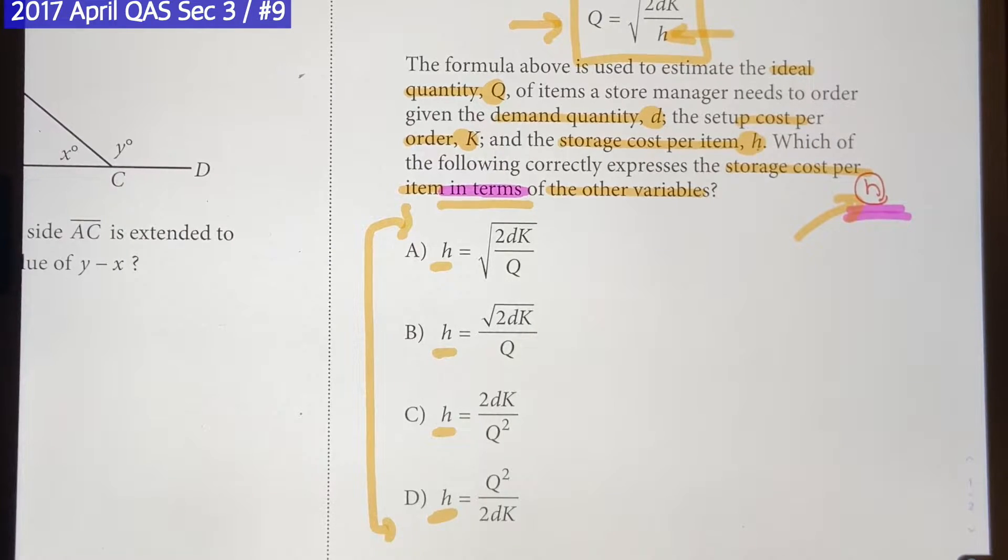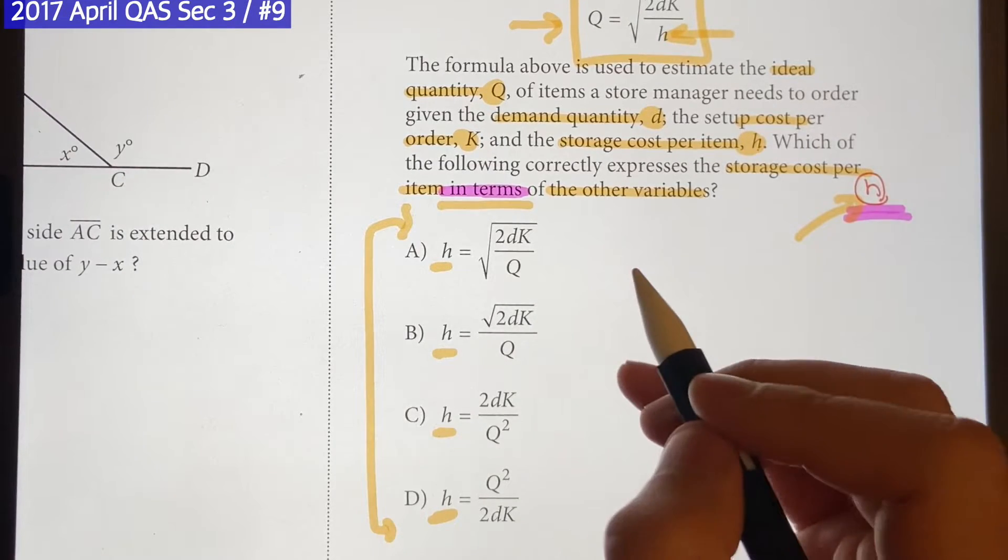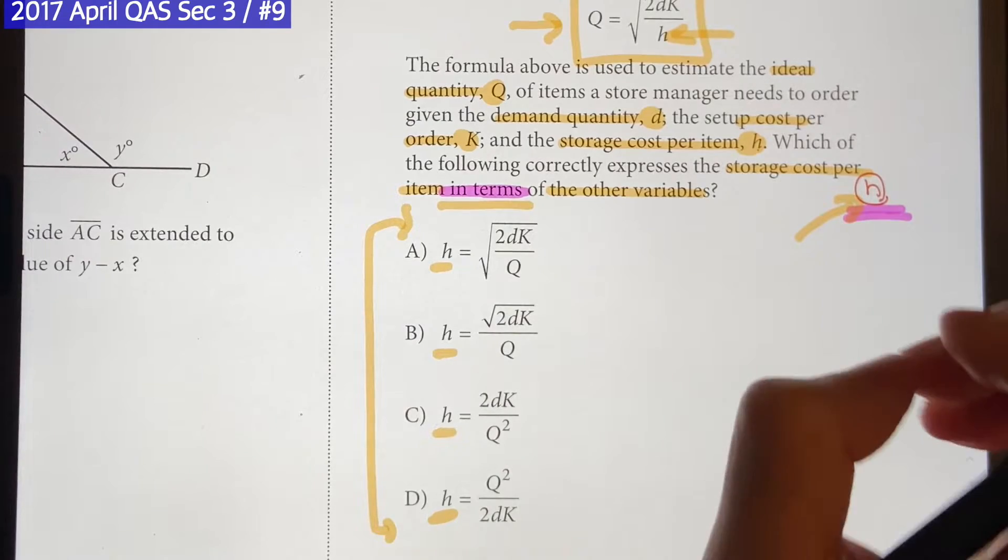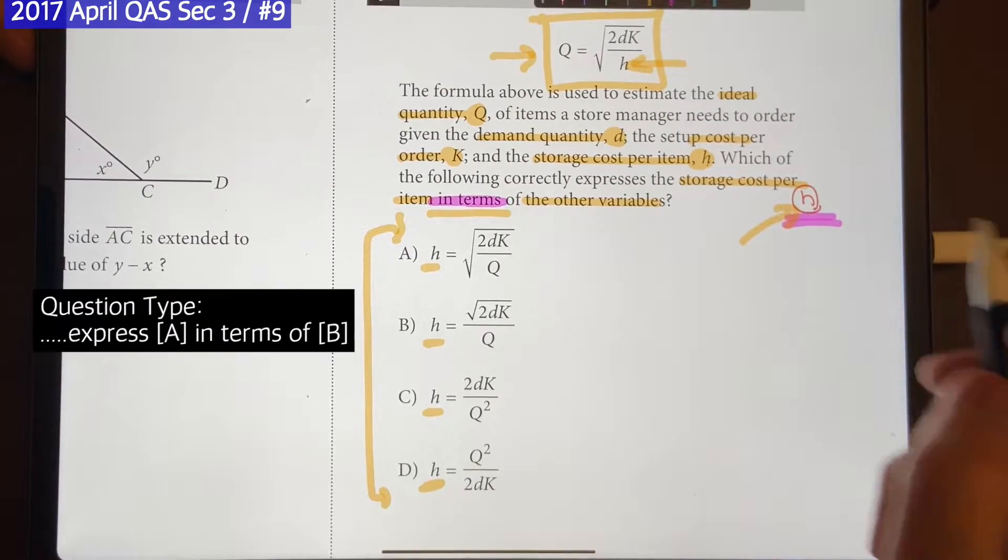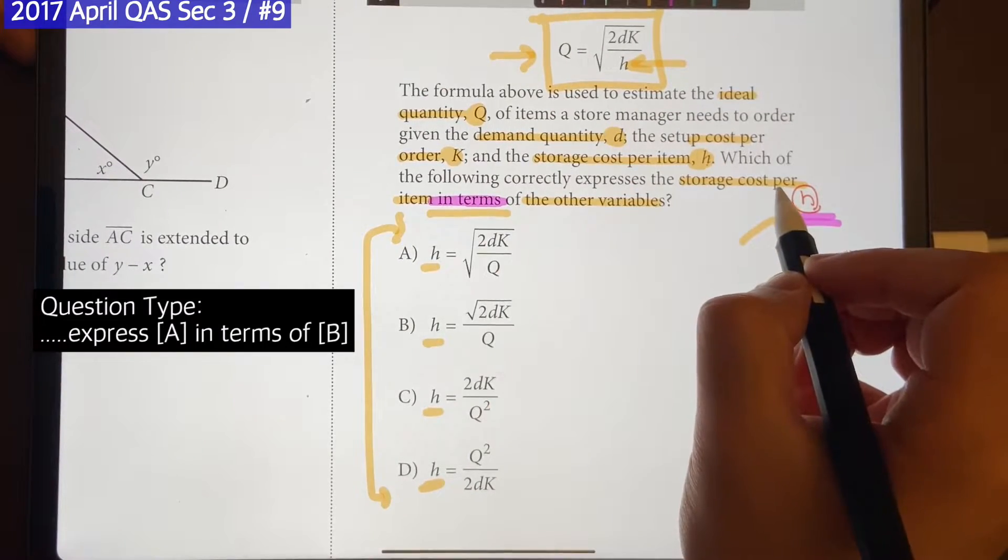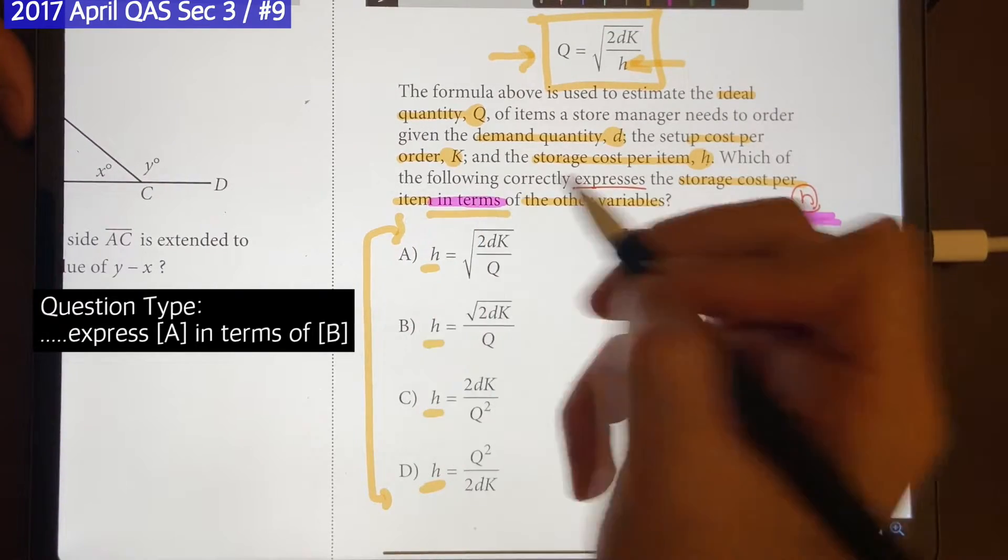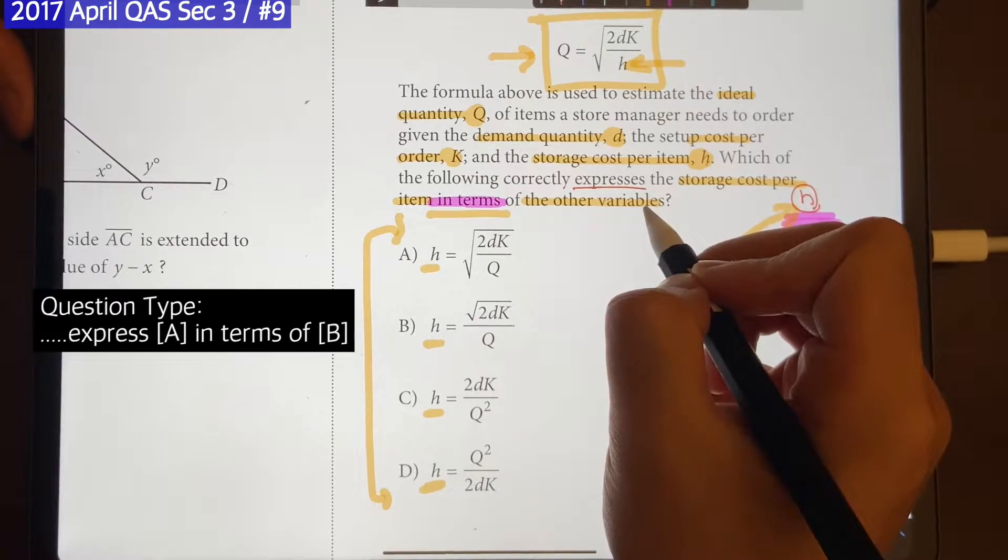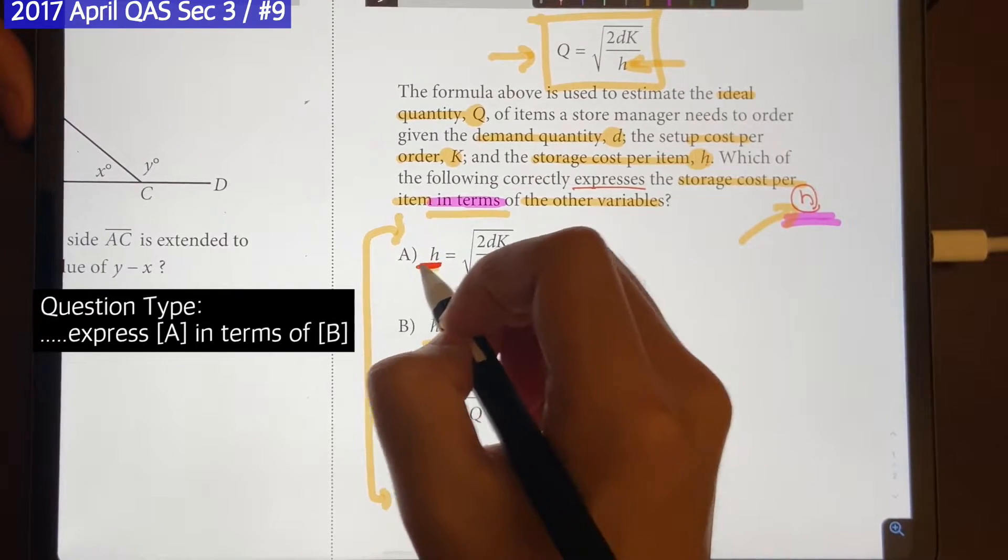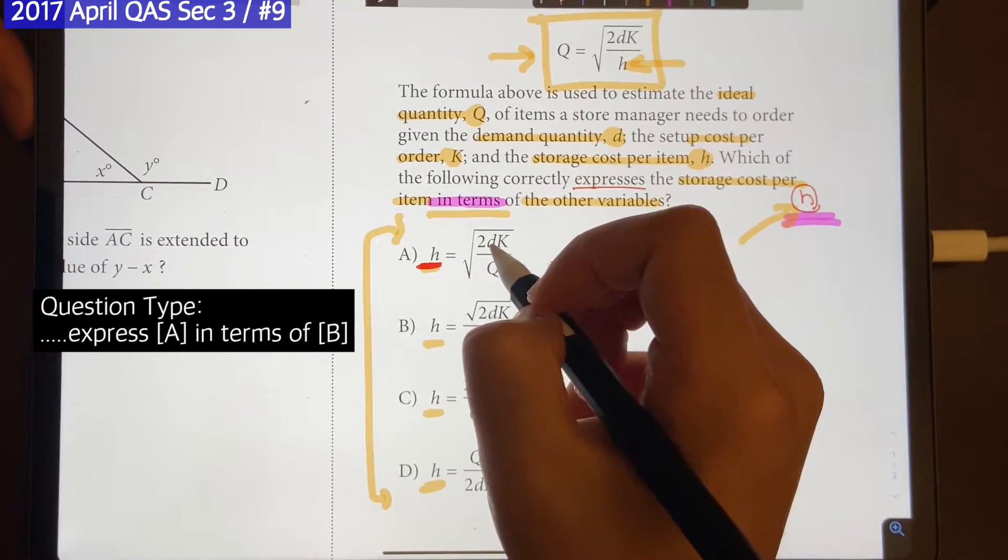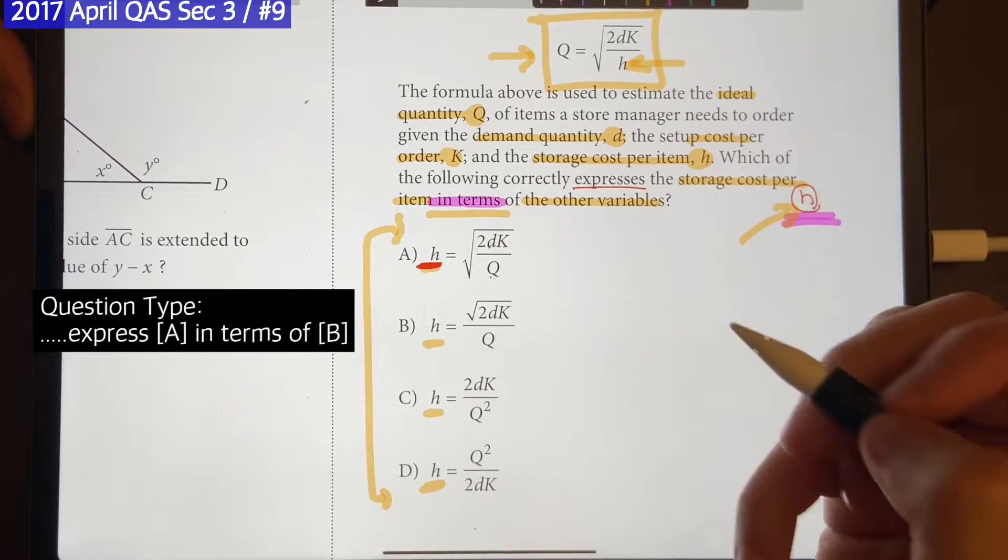Now rather than flat out memorizing what to do for this type of question, try to understand it. That way you won't get confused and it's going to stick with you long term. So let's try to understand what this part is actually saying. They want you to show H in terms of, or by using, other variables. They want you to show what H is by using other variables like D, K, and Q.